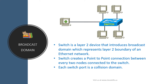Let's move on to broadcast domain. As you know, a switch is a layer 2 device that introduces broadcast domain, which represents the layer 2 boundary of an ethernet network. Unlike a hub, a switch creates a point-to-point connection between every two nodes connected to it. If you look inside a switch, when a host puts an electrical signal on the wire, it can only reach a switch port.